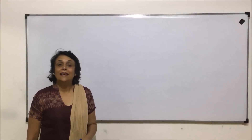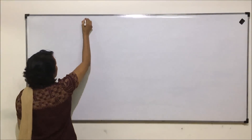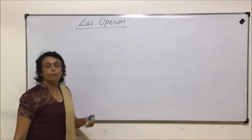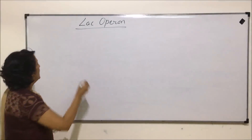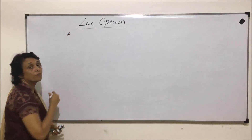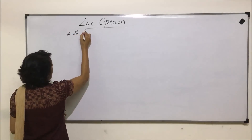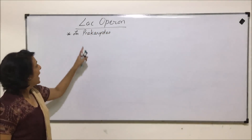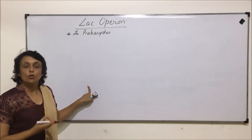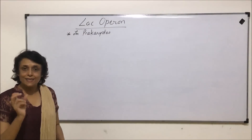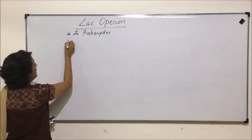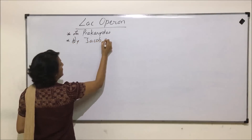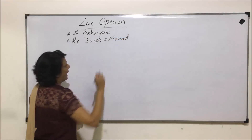Let us talk about lac operon. Lac operon operates in the case of bacteria, so this is found in prokaryotes. This operon works for lactose consumption, and that is why the name 'lac' — it is actually taken from 'lactose'. This was explained by Jacob and Monod.